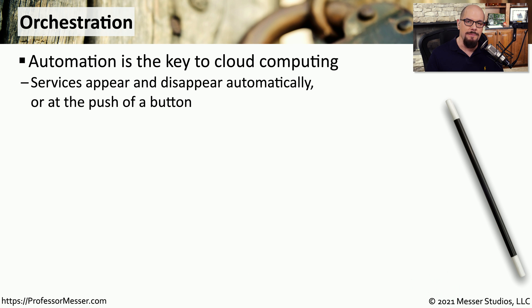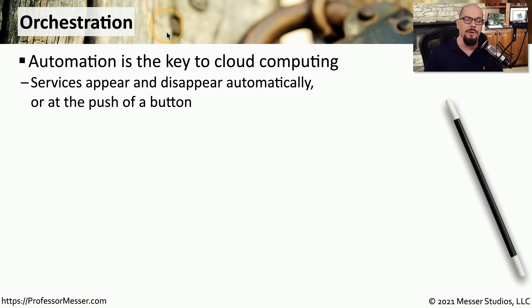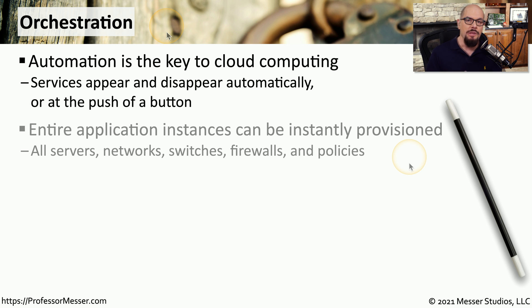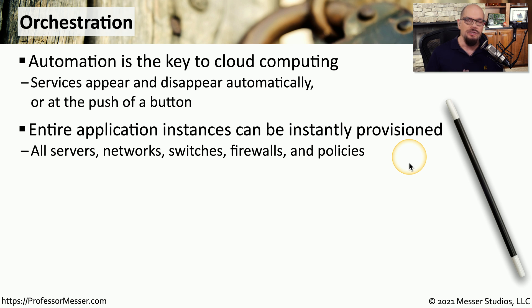Once you have an application that can be provisioned, you might want to automate the process of making it available through a method called orchestration. Orchestration is really the key to cloud computing because you're able to automate the provisioning and deprovisioning of these applications. This orchestration allows us to instantly provision an application without any type of human intervention — deploying servers, network configurations, security components, and anything else associated with that application.